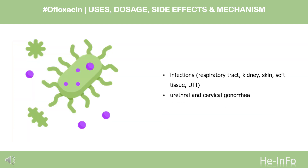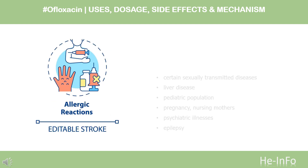What is ofloxacin used for? For the treatment of infections: respiratory tract, kidney, skin, soft tissue, UTI, urethral, and cervical gonorrhea.